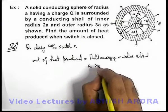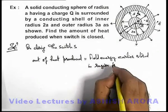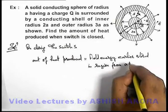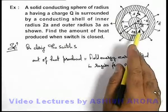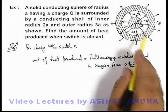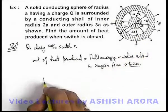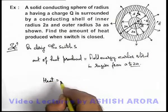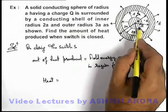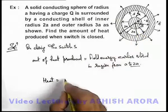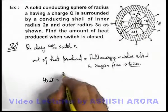In the region from radius a to 2a. Because earlier there was an electric field from a to 2a, and finally no electric field exists in this region. This amount of heat can be calculated by integrating the field energy from radius a to 2a. So this will be from a to 2a.